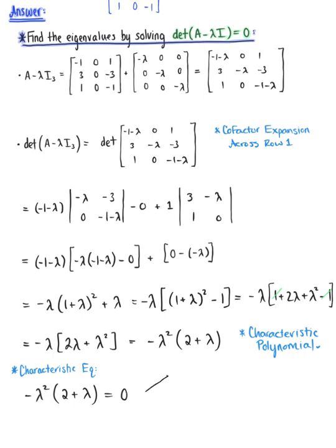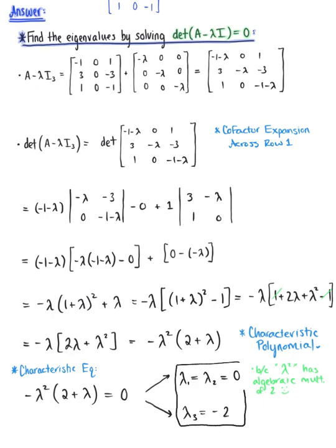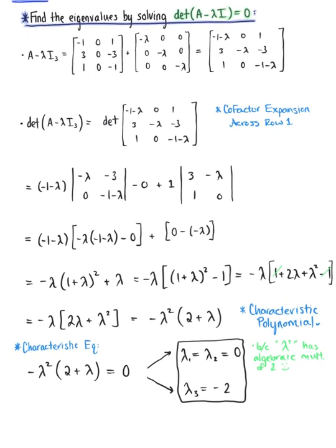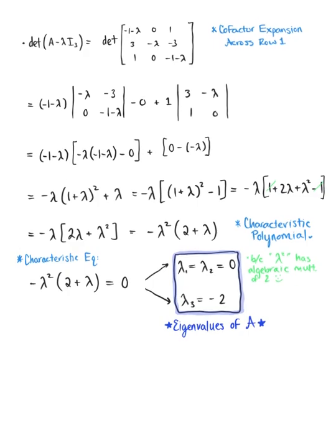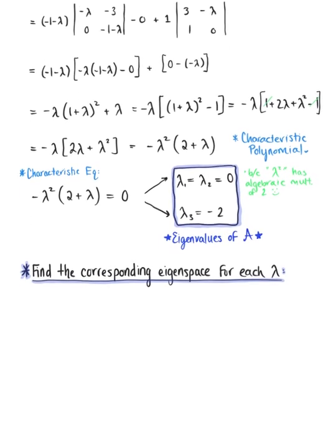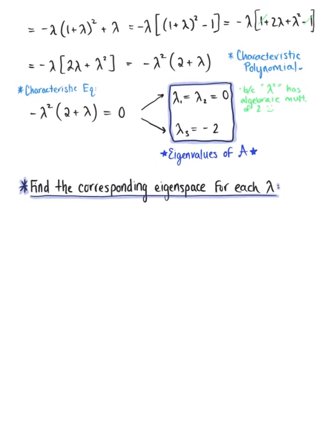Applying the zero factor property, we can see that lambda sub 1 equals lambda sub 2 equals 0, and lambda sub 3 is equal to negative 2. These are the eigenvalues of matrix A. Now that we have these eigenvalues, we are ready to find their corresponding eigenspaces.